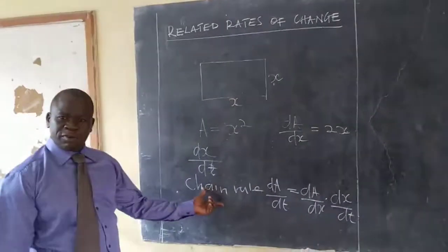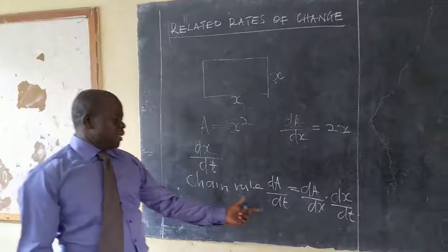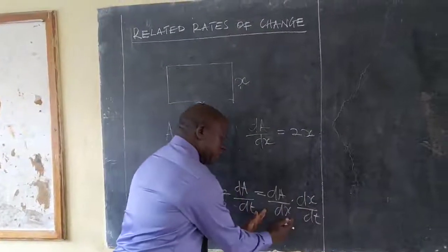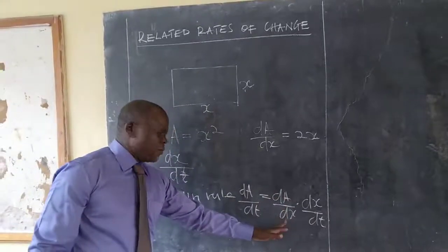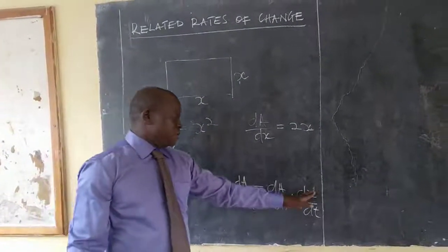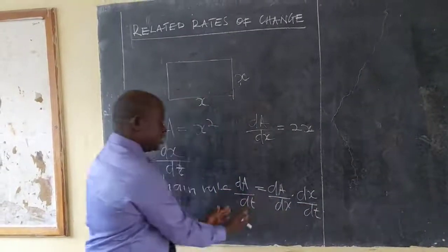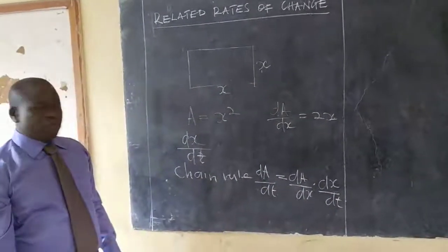Recall the chain rule. This ideally means, of course, this is the rate of change of area with respect to sides, this is the rate of change of side. So if I combine this, it will give me the rate of change of area.